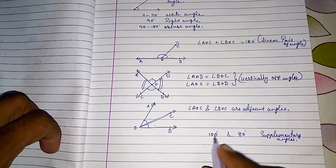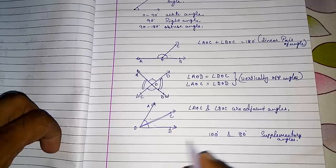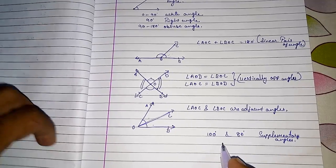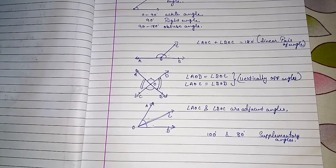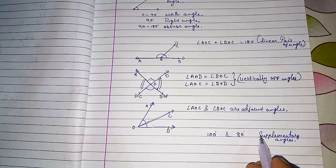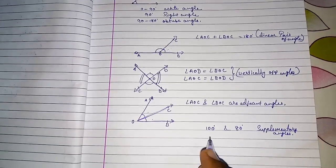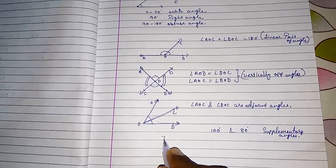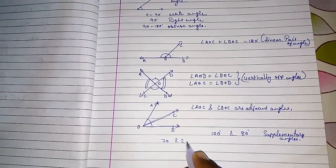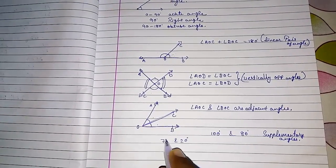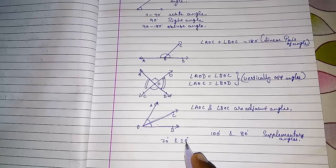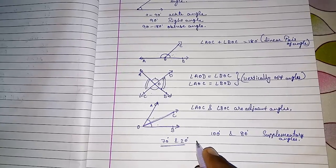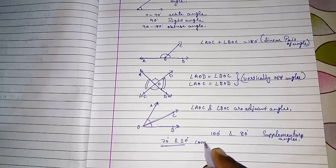Complementary angles: when two angles make a sum of 90 degrees, they are called complementary angles. For example, 70 degrees and 20 degrees — the sum of 70 and 20 is 90 — so these two angles are called complementary angles.